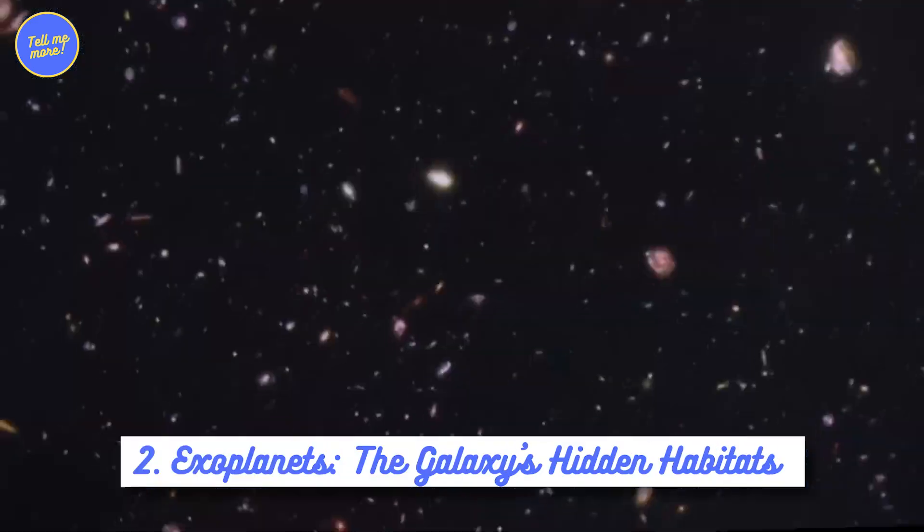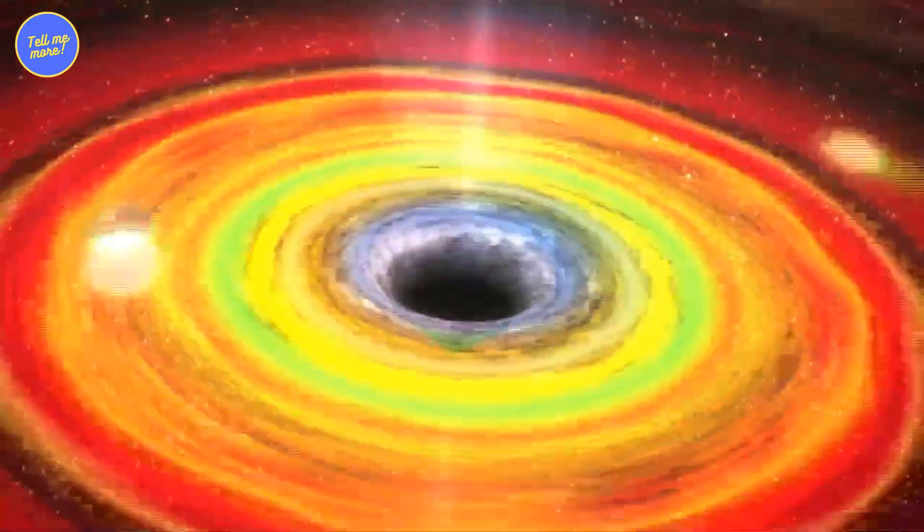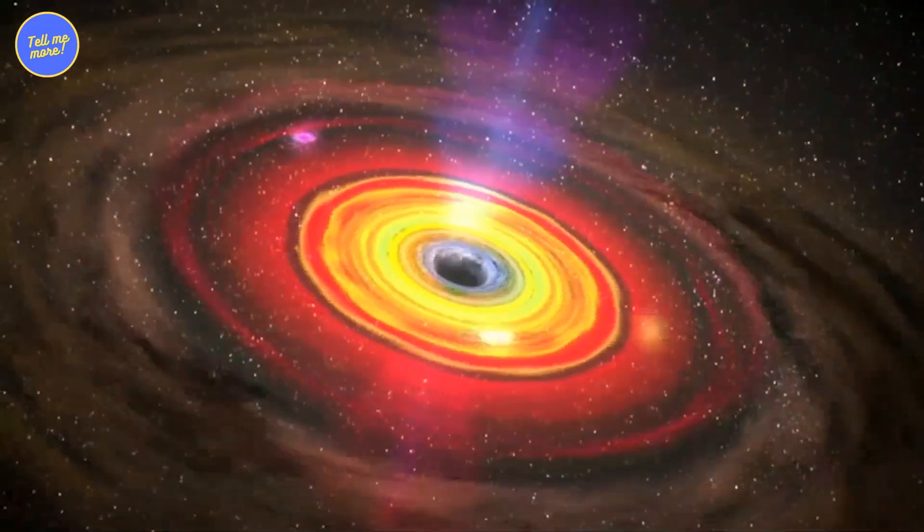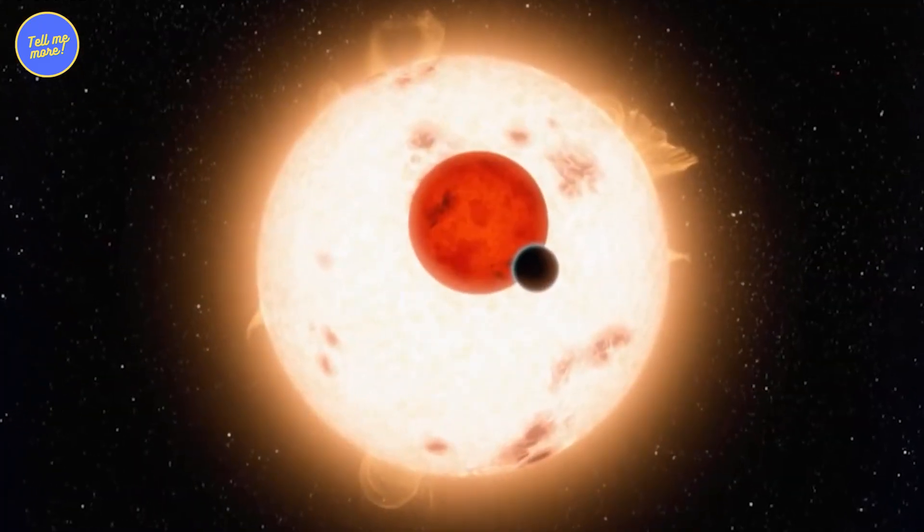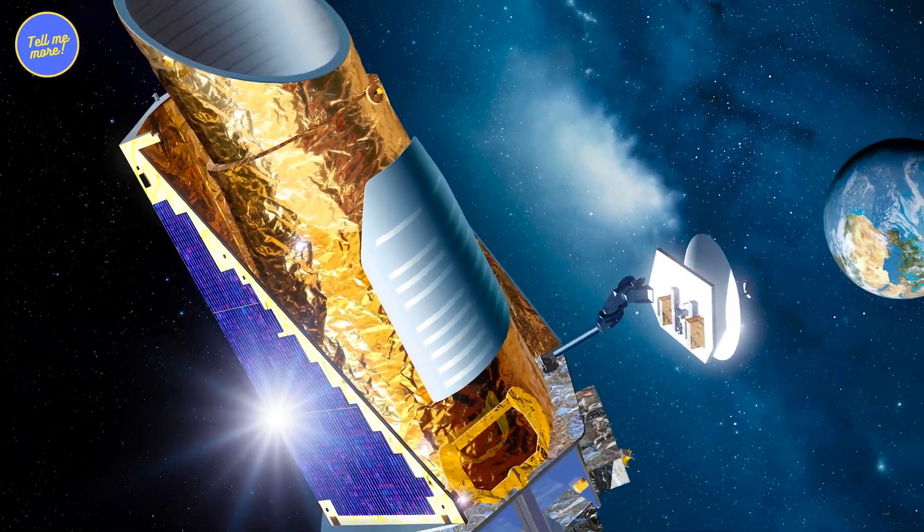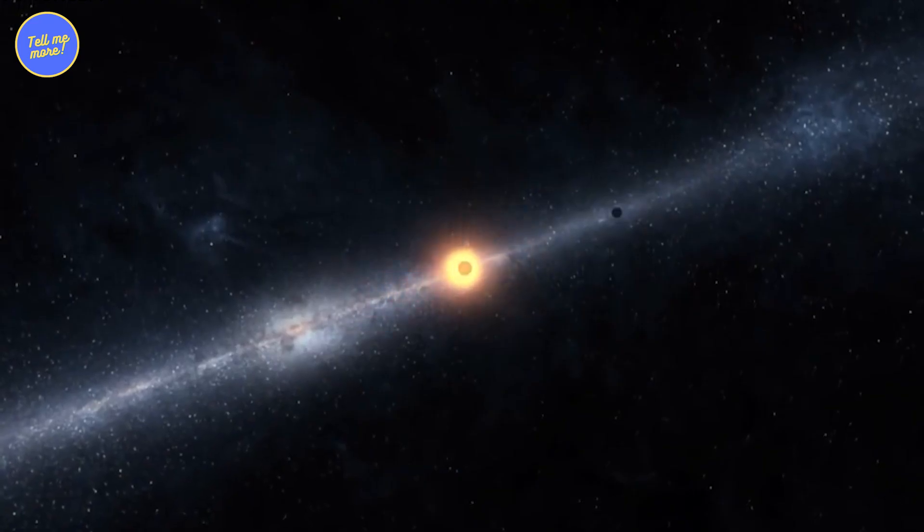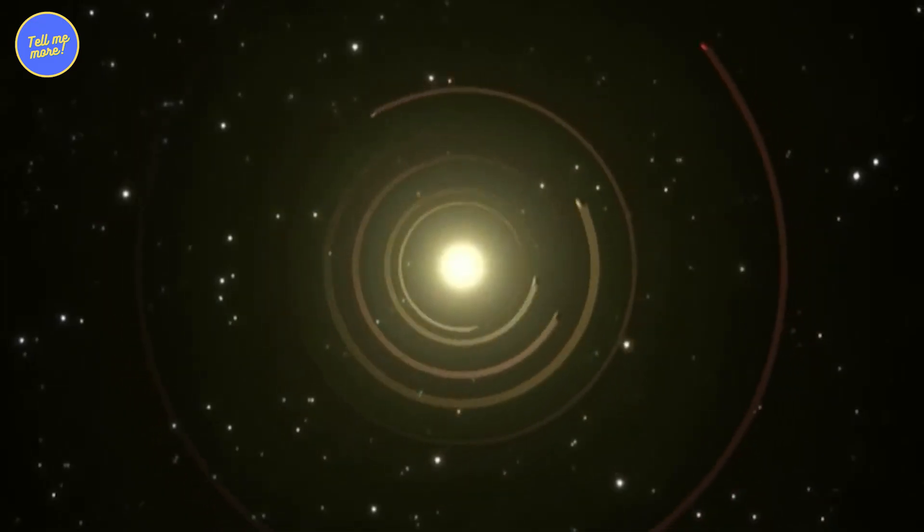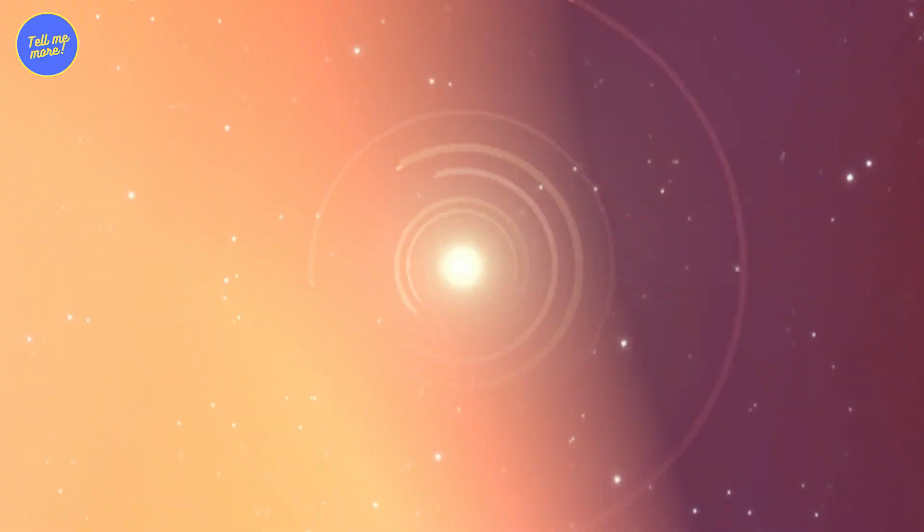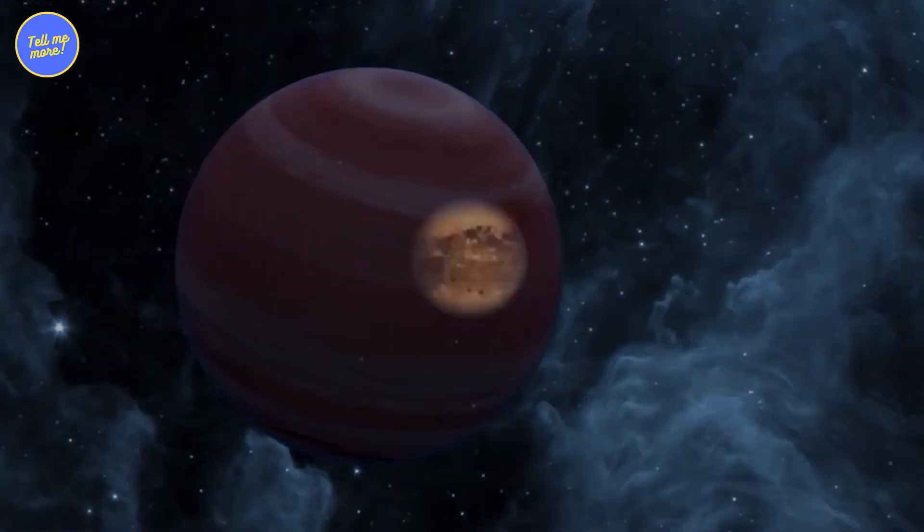2. Exoplanets, The Galaxy's Hidden Habitats. Get ready to have your mind blown. For the longest time, we thought our solar system was the only place with planets. But in 2009, Kepler Space Telescope changed the game. It stared at a slice of the sky and found thousands of exoplanet candidates. These planets aren't just hanging around. They're circling other stars like cosmic dance partners. And some of them are in the habitable zone, a sweet spot where conditions might be right for water and life to flourish.